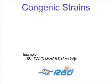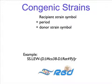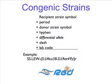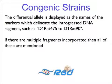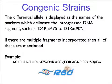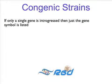For congenic strains, the symbol is composed of the symbol of the recipient strain, a period, the symbol of the donor strain, a hyphen, the differential allele in italics, a slash, then the ILR code of the lab which developed the strain. The differential allele is displayed as the names of the markers which delineate the introgressed DNA segment, such as D1RAT475 to D1RAT90. If there are multiple fragments incorporated, then all of these are mentioned. On the other hand, if only a single gene is introgressed, then just the gene symbol is listed.